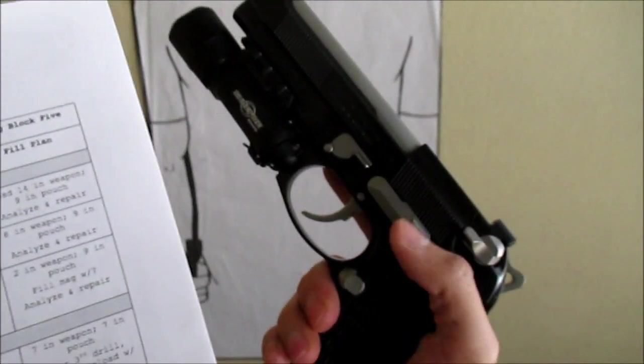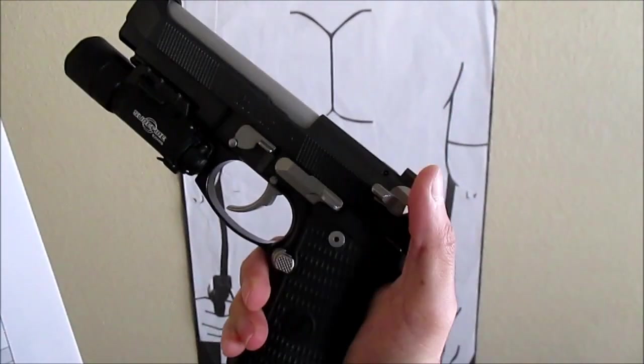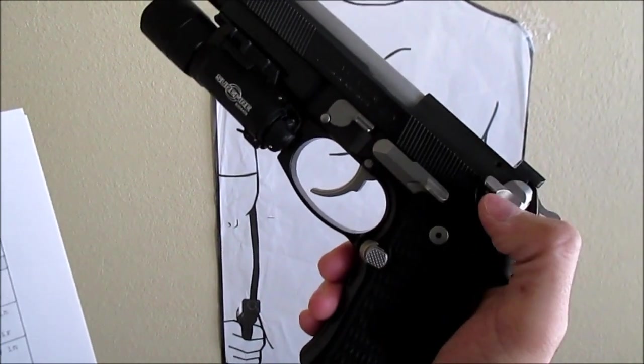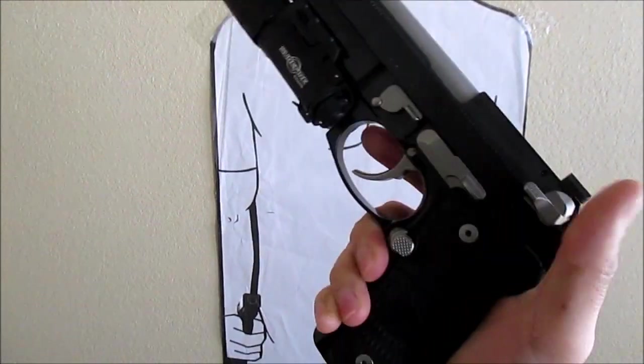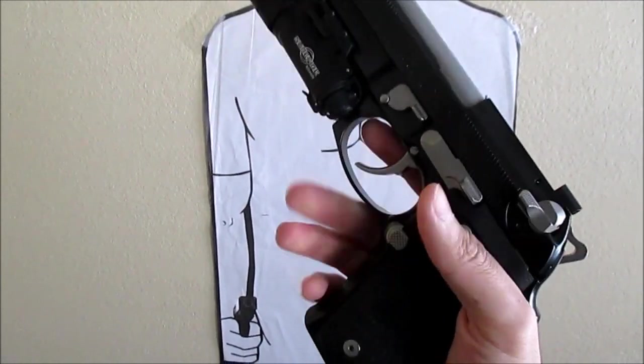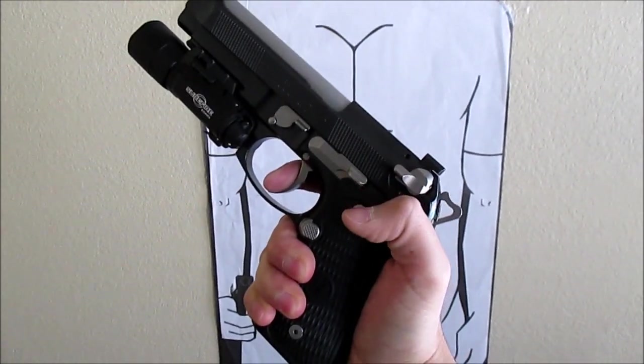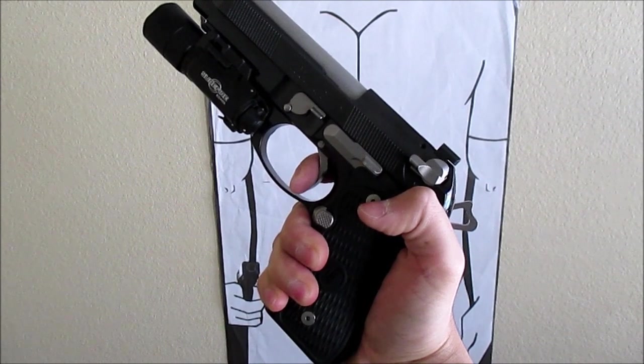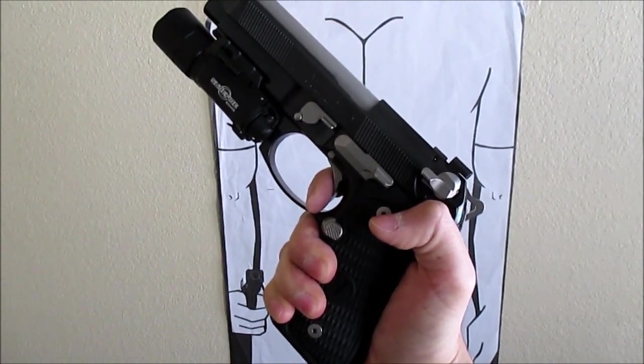So on your M9, your M9 is double action, single action, which means after you drew it from the holster, you're supposed to have the safety on. So you'll take the safety off. At that point, your hammer will be forward. And so when you pull the trigger, it's going to be a long trigger pull. Watch my hammer. The hammer is going to go back and forward, which makes it double action.